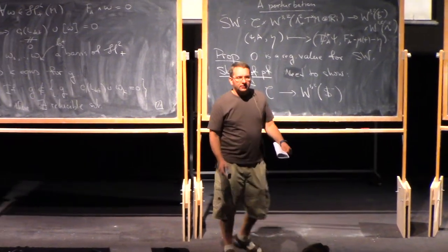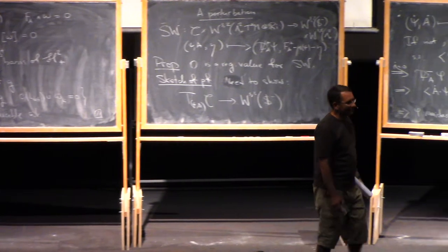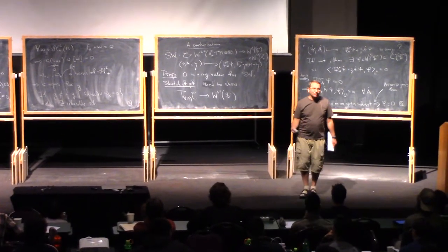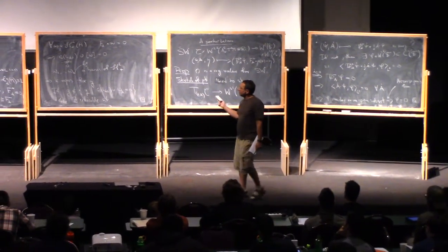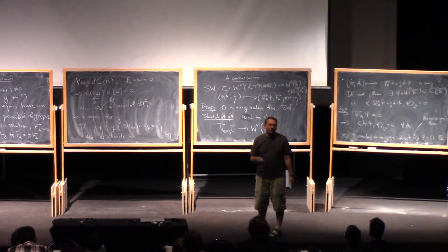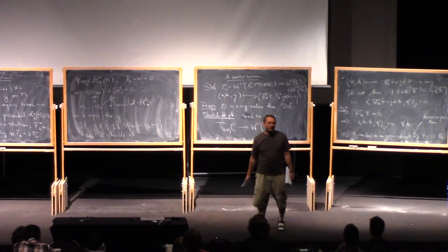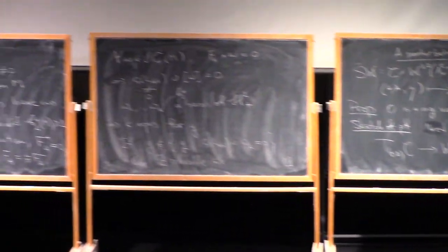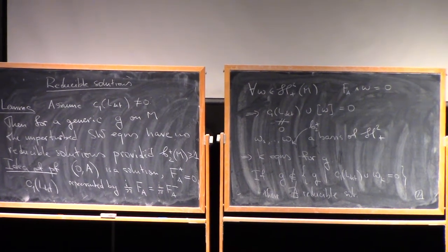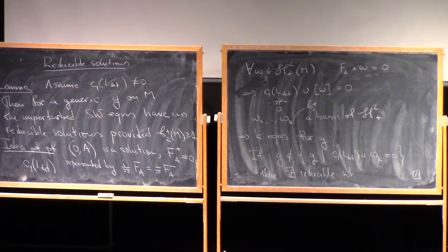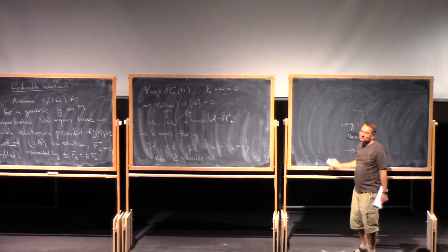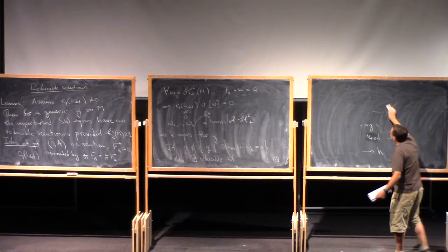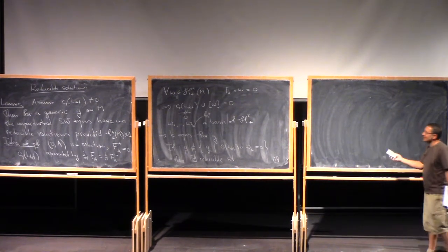[Question: If b^+_2 is one, generically in a one-parameter family, you will have a reducible solution?] Exactly, yes. That's precisely correct. [Question: What happens when b^+_2 is zero?] You can't say really much. That's really a bad case. If b^+_2 is at least one, you have the wall-crossing phenomenon. But if b^+_2 is zero, then you are more or less lost. That's precisely the reason why this doesn't work.